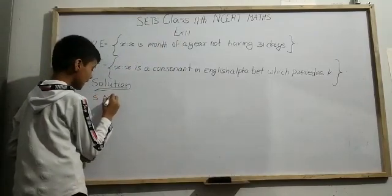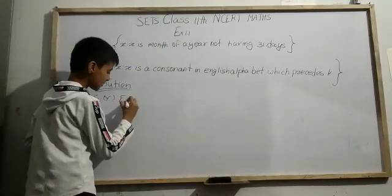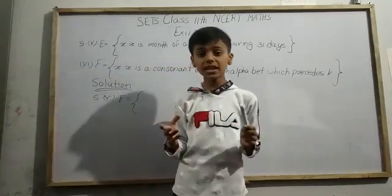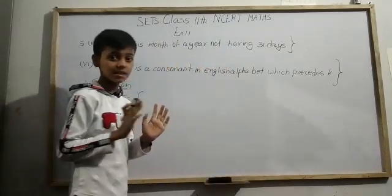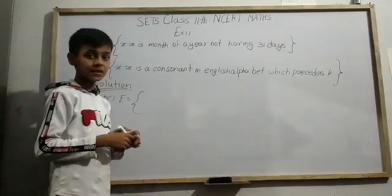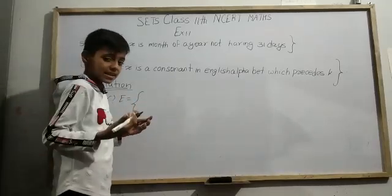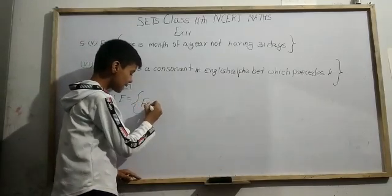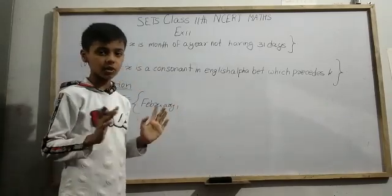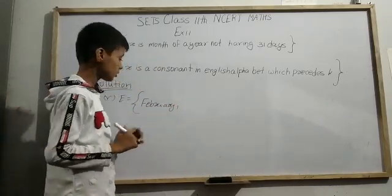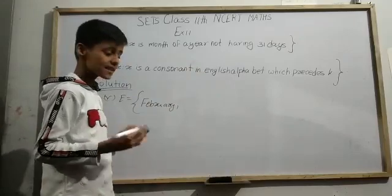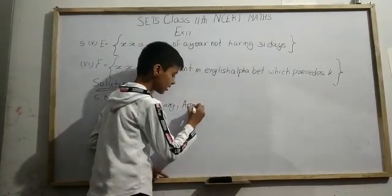So for set E, the question arises: which months have 31 days and which do not? January has 31 days, so we do not take it. February does not have 31 days, so we write February. Next, March has 31 days, so we skip it. April does not have 31 days, so we include April.